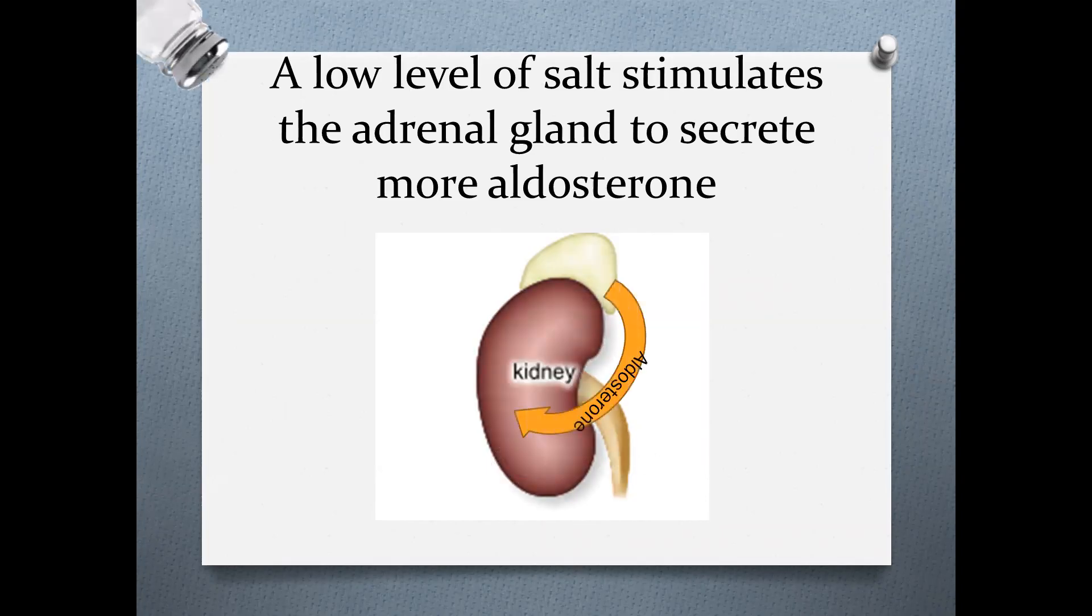The adrenal gland will secrete the hormone aldosterone into the blood, and this will be transported to the target organ, which is the kidney again, and it will affect the renal tubules.